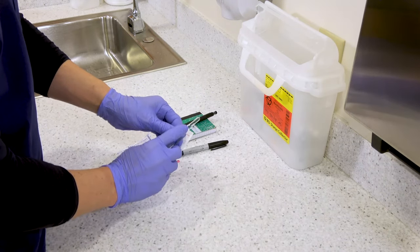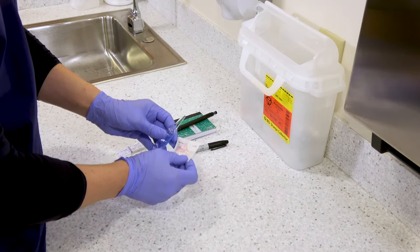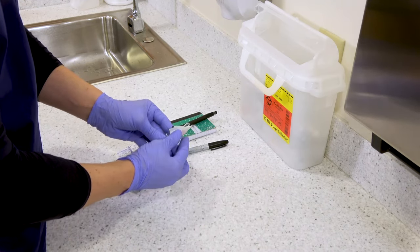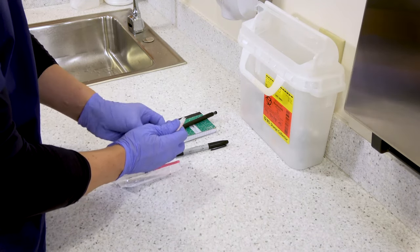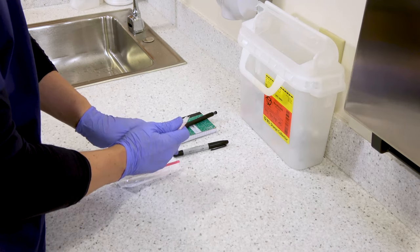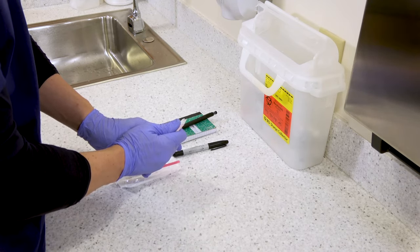Now you want to look at the top of the ampule and see if there's a little dot on it. If so, that is where you want to plan to put your thumb. You're going to wrap a piece of gauze around the top of the ampule, or you can even put the top of the ampule into an alcohol pad package.